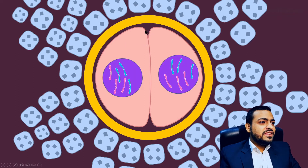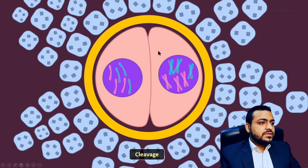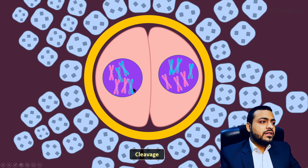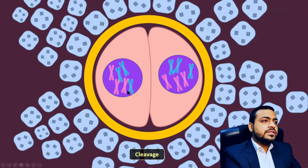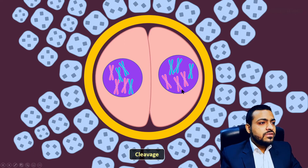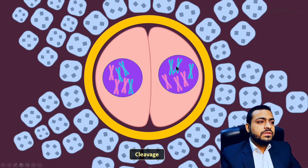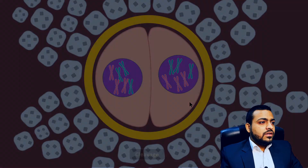After cleavage, two daughter cells are formed. Before starting a new cleavage cycle, these cells must again undergo DNA replication to form complete chromosomes, since the chromatids were initially only single copies.